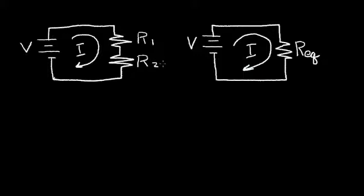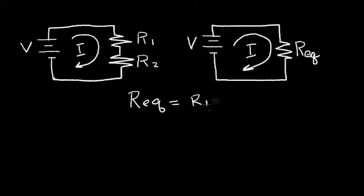I want to find one resistor that I can use to replace two resistors. And the answer is R, the equivalent resistance, is equal to the sum of the two resistors, R1 plus R2.